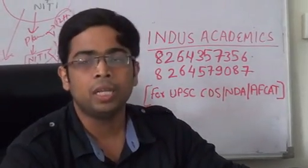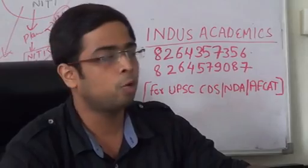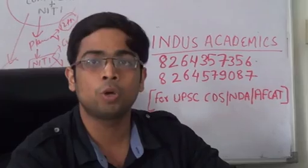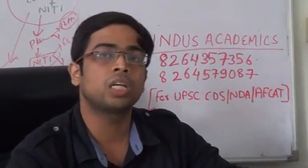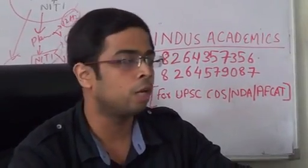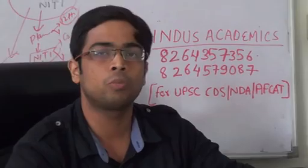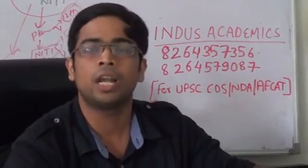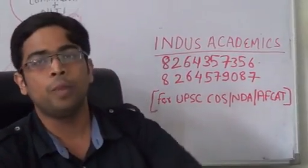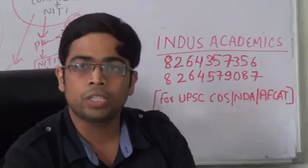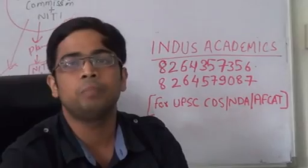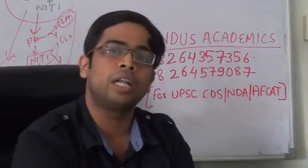For probability, every year one question comes from applying the binomial theorem in probability — you should know the conditions required to apply it. One question also comes from Bayes' theorem, and one from odds against and odds in favour of a given event. Knowing these basic properties can help you solve many questions directly. Saving time on these lets you spend 15–20 minutes on the trickier questions.